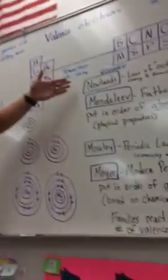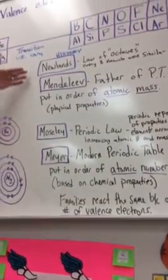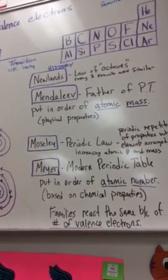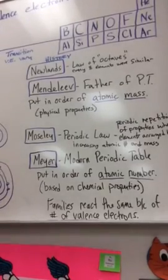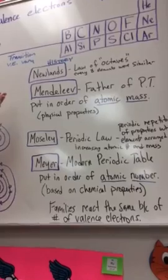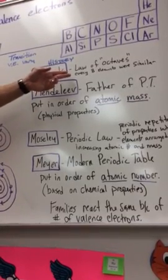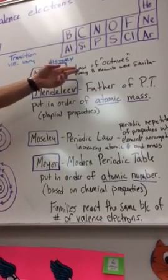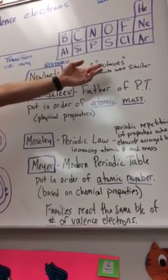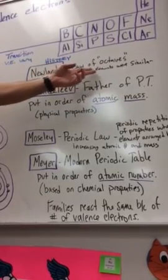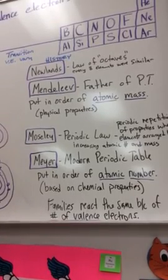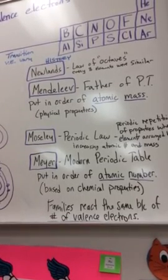We're going to talk about the history of the periodic table today, and it's important to understand these four scientists. The first one is John Newlands, and he worked with elements way back in the day, before they even had that many elements — literally only about 12 or 13. He came up with what was called the law of octaves, and 'oct' means eight. What he realized was every eight elements, the properties were similar.